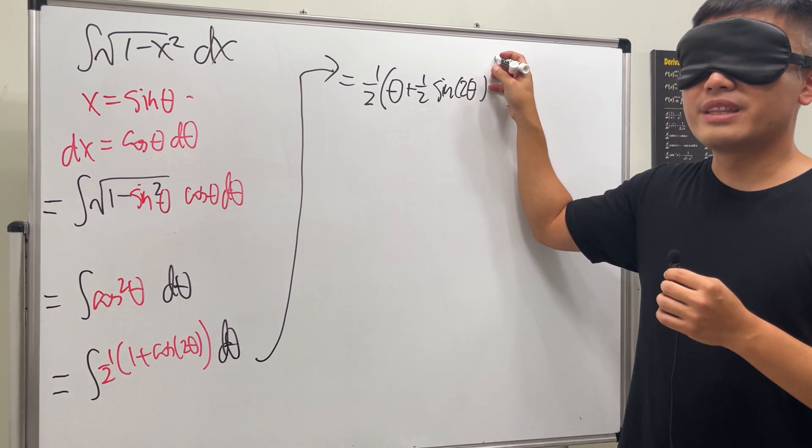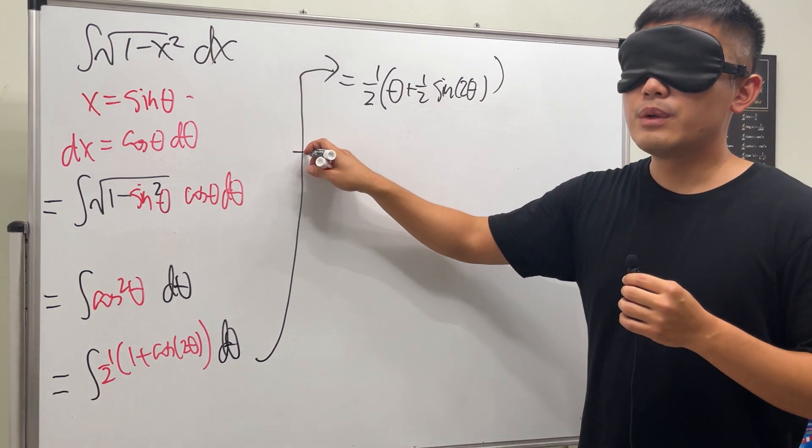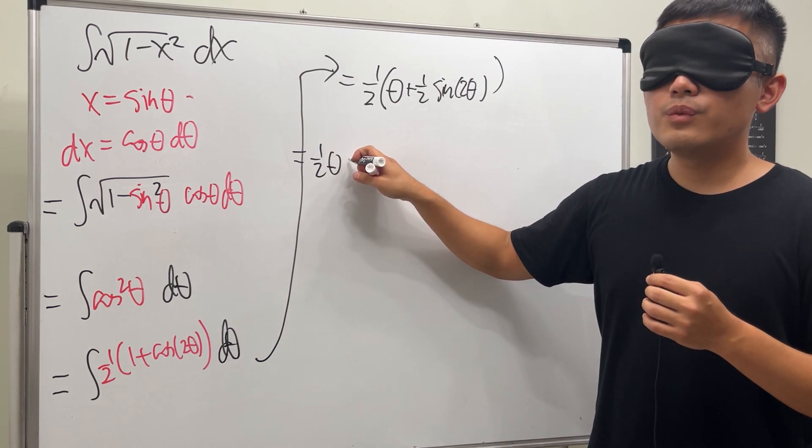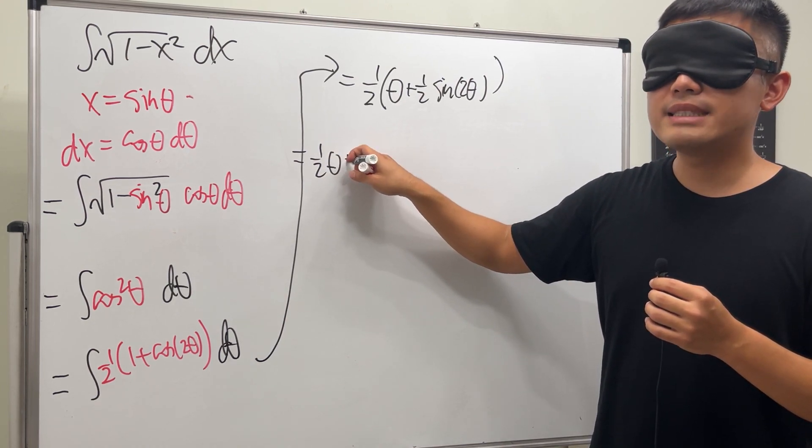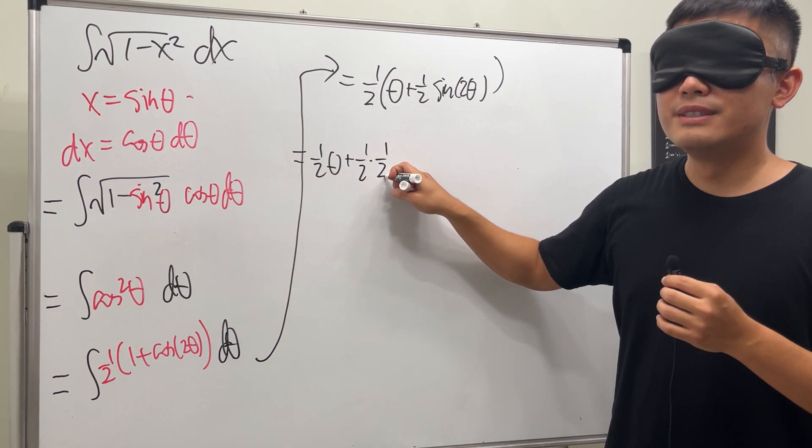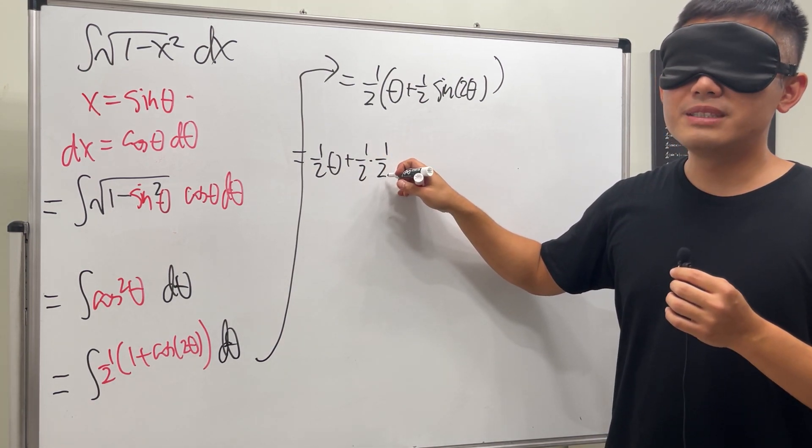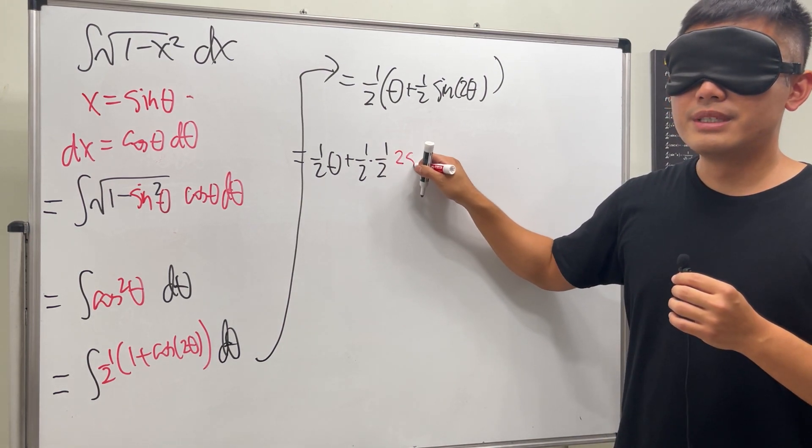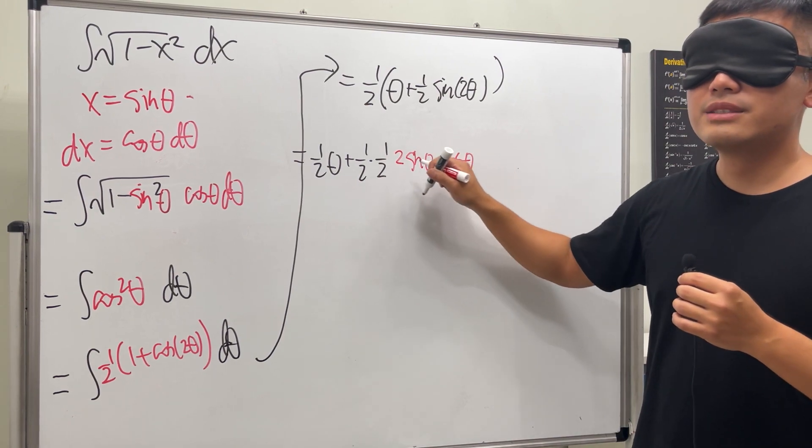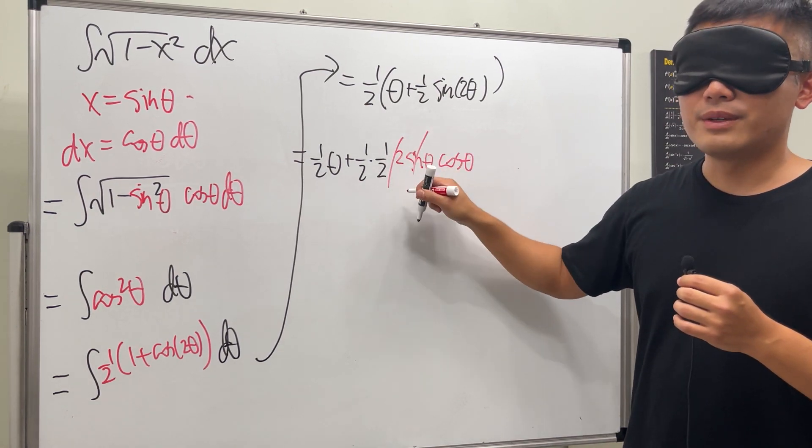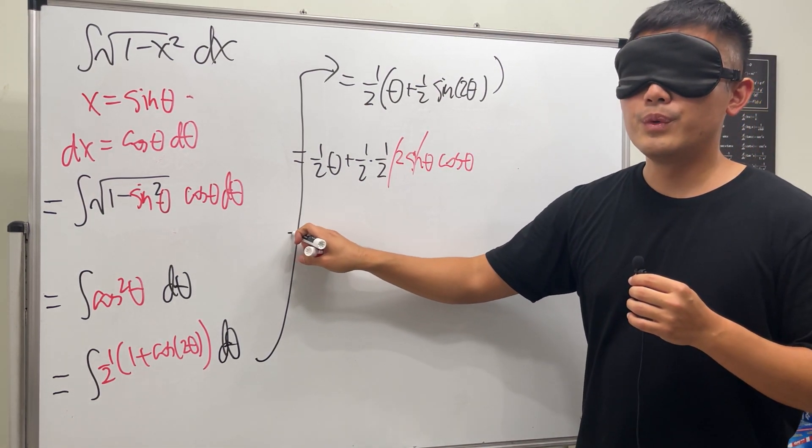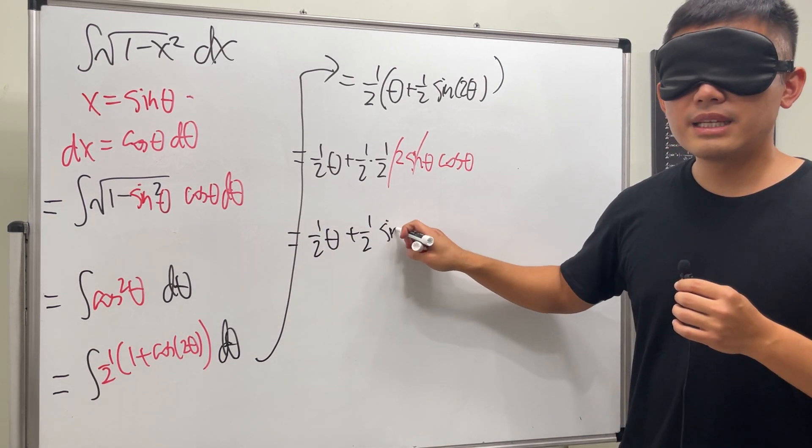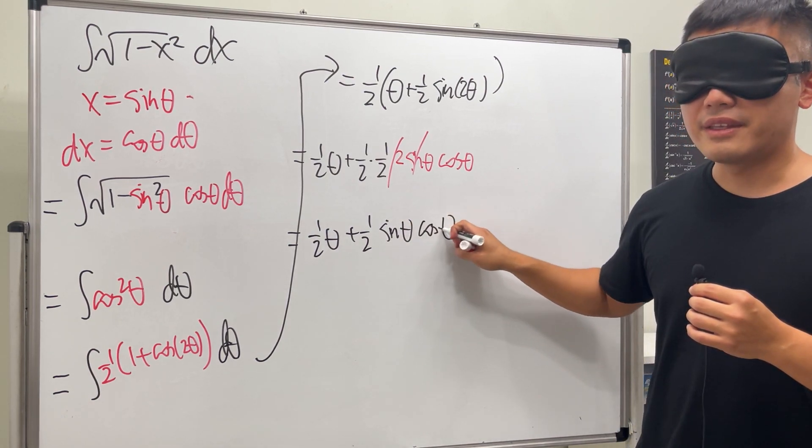Now I'll distribute the one half inside, so we have one half theta, and we have to add one half times one half—I know that's one over four—but the reason is because sine of two theta is two sine theta cosine theta. So the one half and the two cancel, and we will get one half theta plus one half sine theta cosine theta.